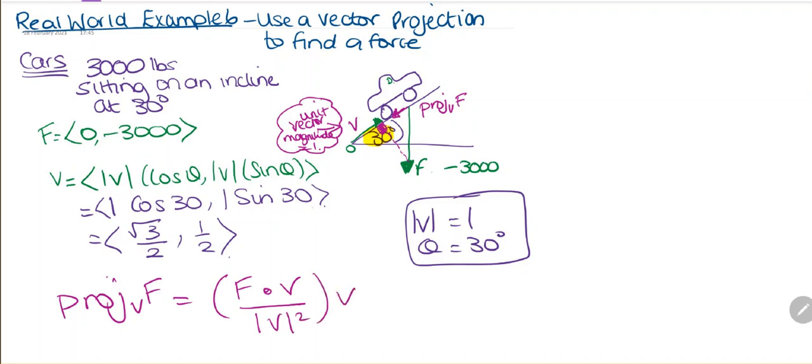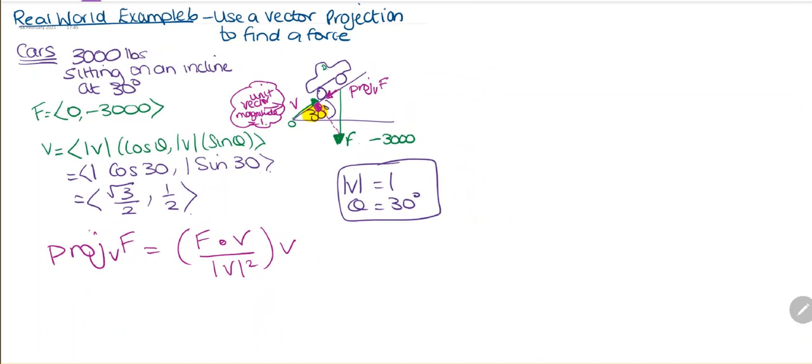If we substitute in our values, the force is <0, -3000>. It's minus 3000 because it's negative, going down. So this is <0, -3000> multiplied by what we just calculated, which is <√3/2, 1/2>.